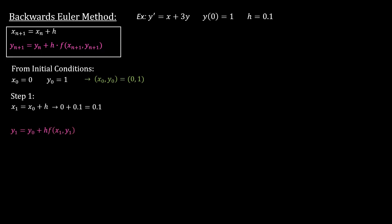In this case, y1 equals y0 plus h times our function at x1, y1, so keep that in mind. That means we need to solve y1, and it equals y0 plus something with a y1. You can see y1 equals y0 plus h times x1 plus 3y1.